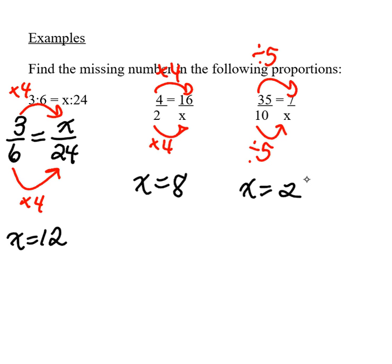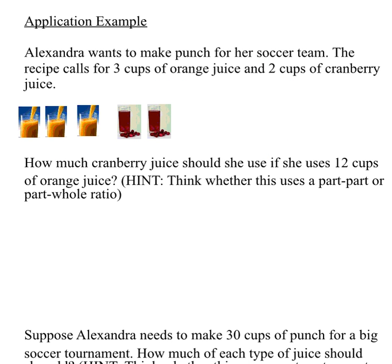So those are a few more proportions. Now let's look at an application of proportions. Here's an example of a recipe to make a punch. You need 3 cups of orange juice and 2 cups of cranberry juice. So what would happen if she was making the punch and she used 12 cups of orange juice — how many cups of cranberry juice should she use?